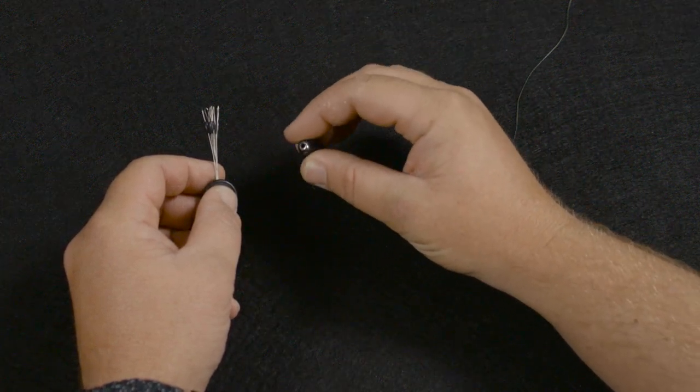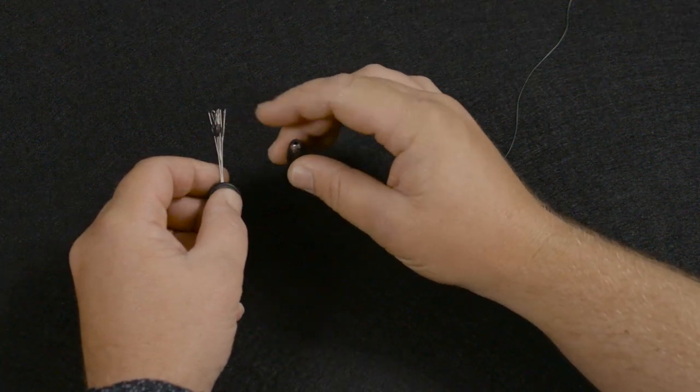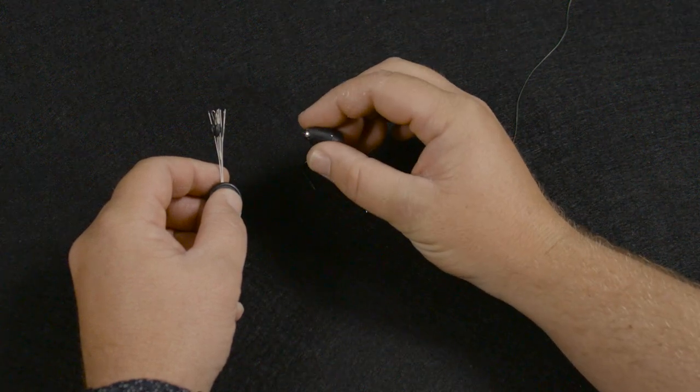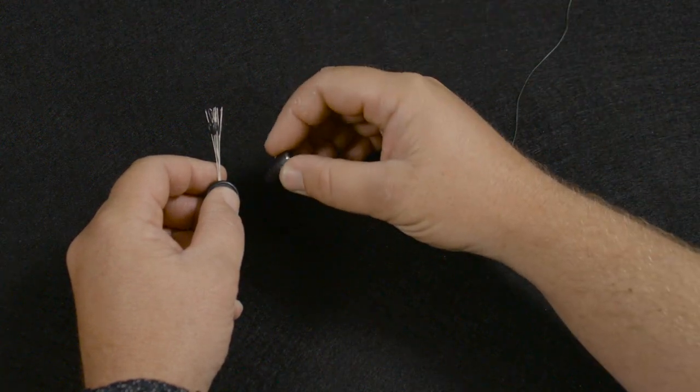What happens with a sliding bullet sinker if you don't peg it - if you don't use a bobber stop or some type of T-peg - it's going to want to go into the cover and fall to the bottom.